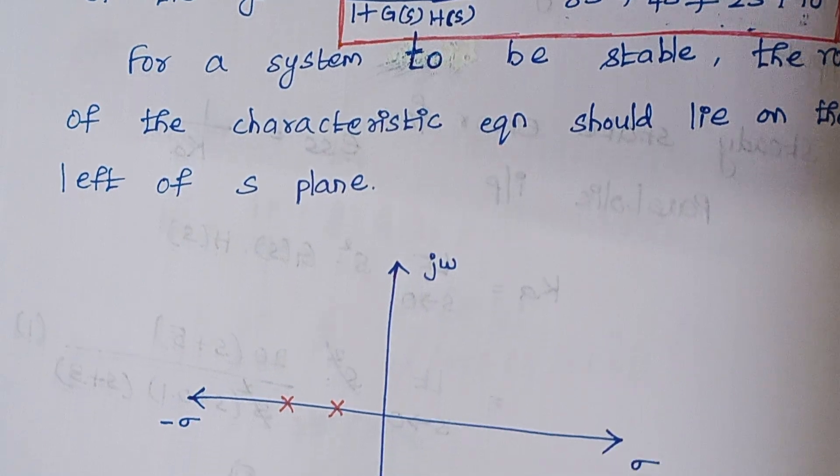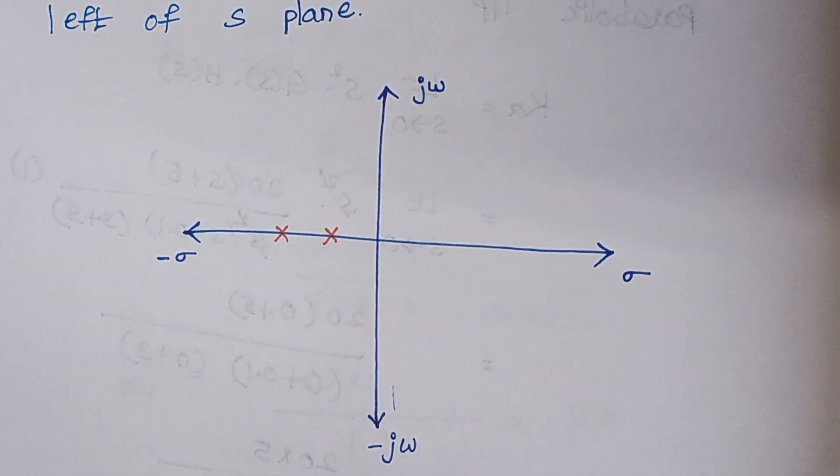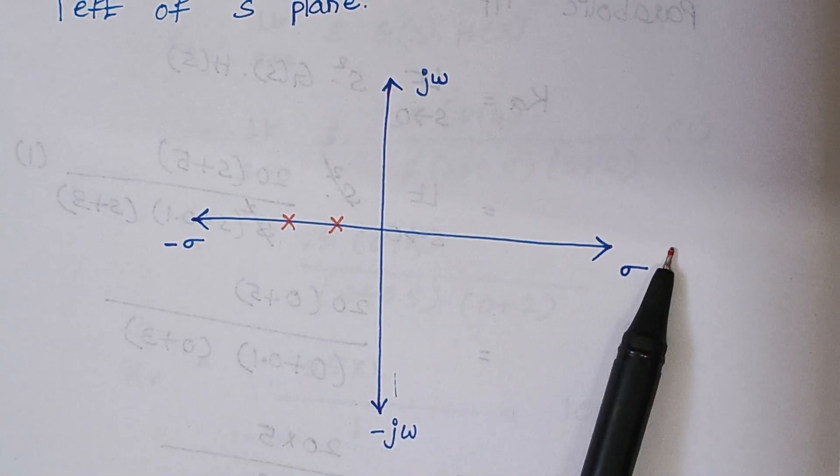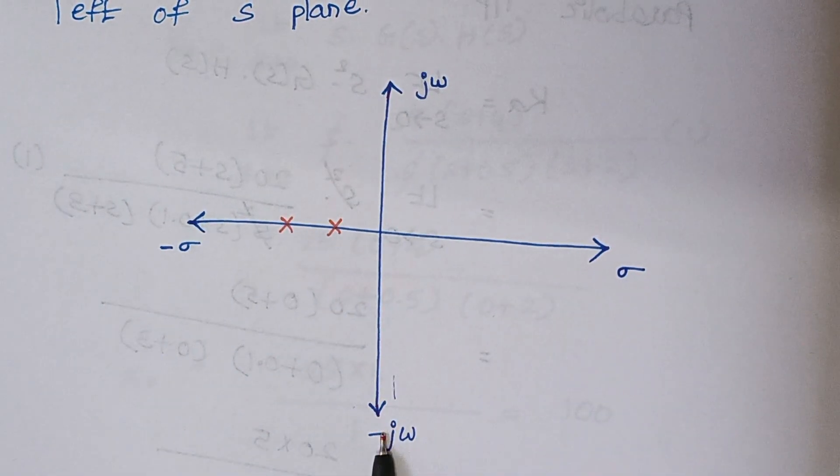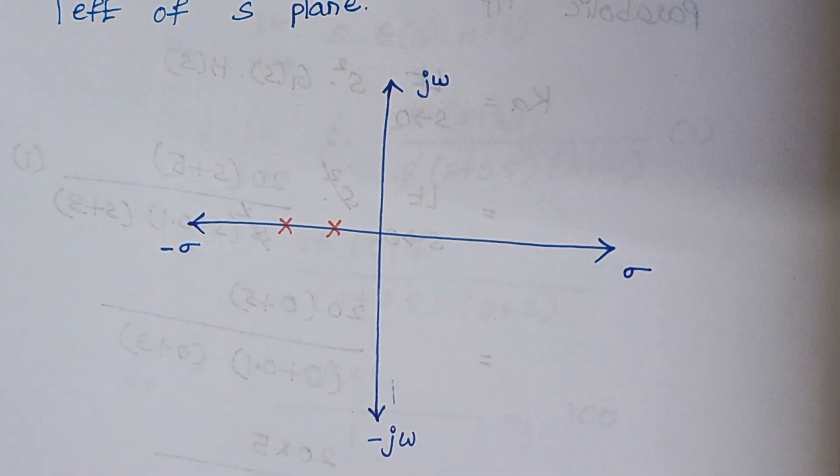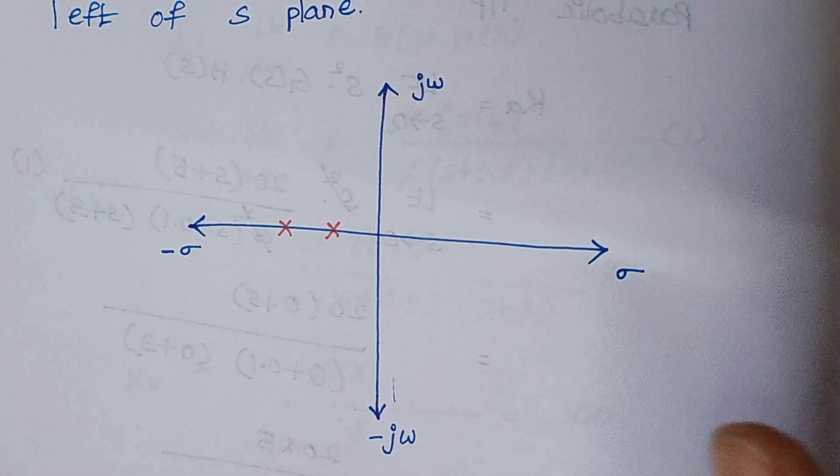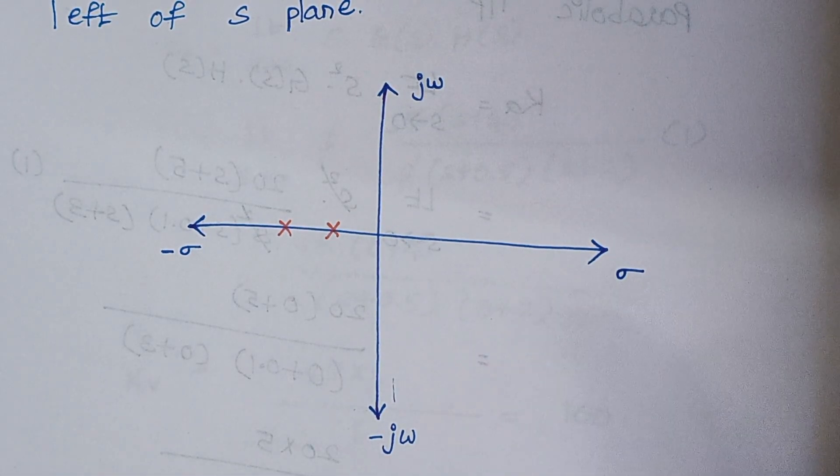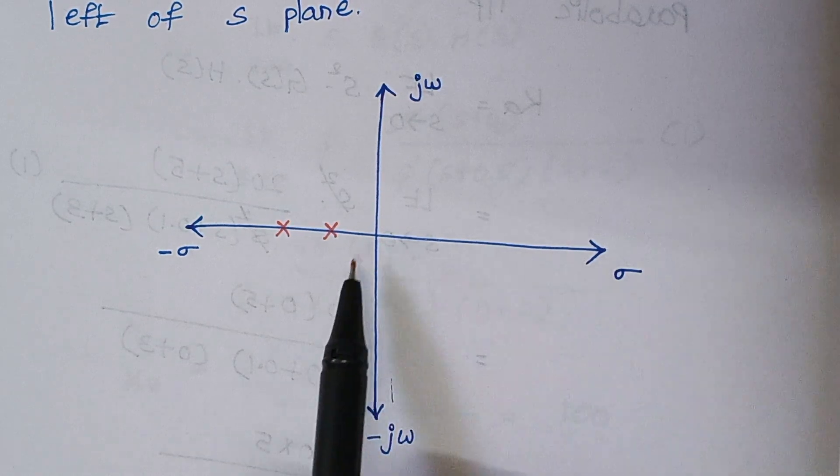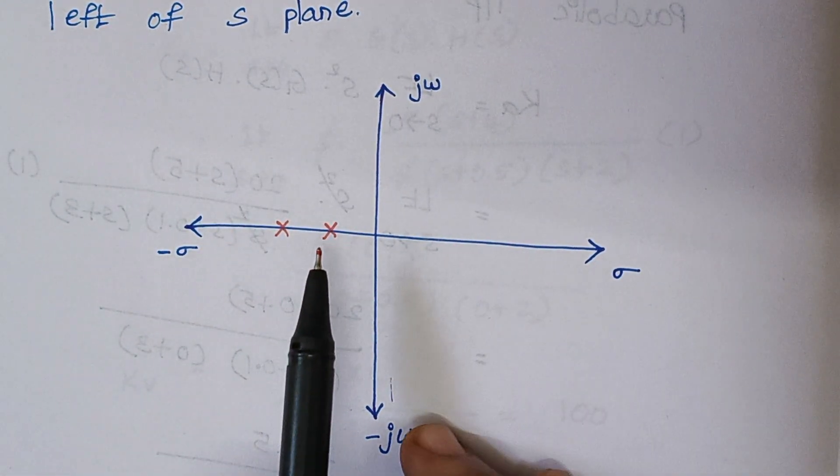You see, this is our typical S plane. So this is our real axis and this is our imaginary axis. So for a system to be stable, we have to find the roots from the characteristic equation. After finding the roots, we have to just place it in the S plane. You have to locate it.